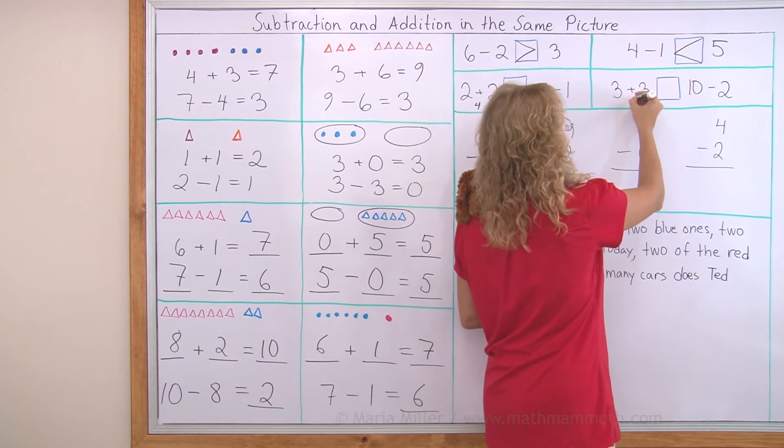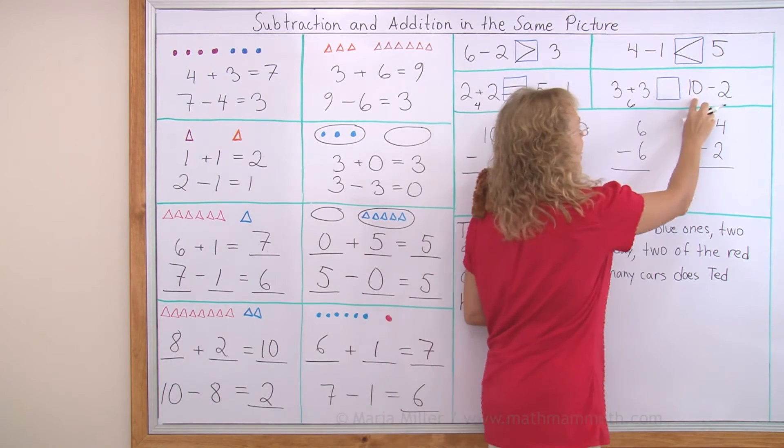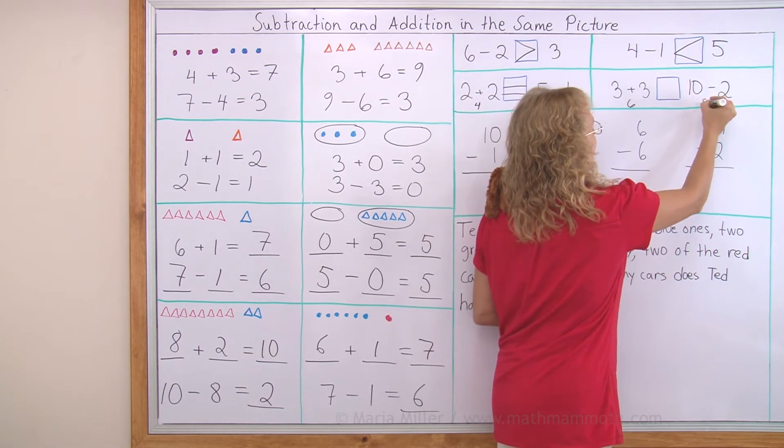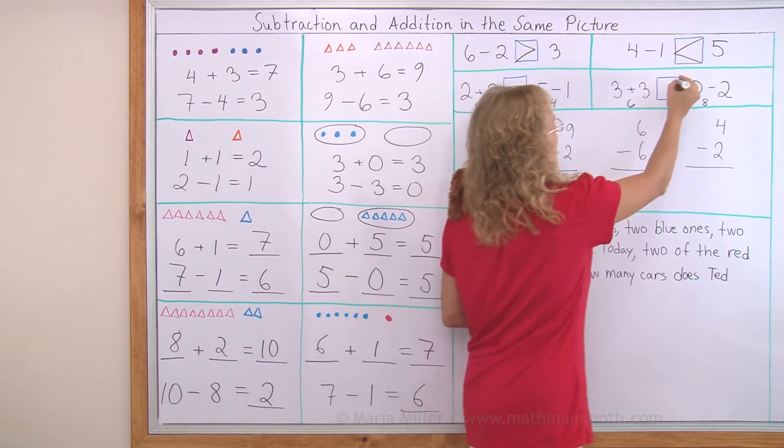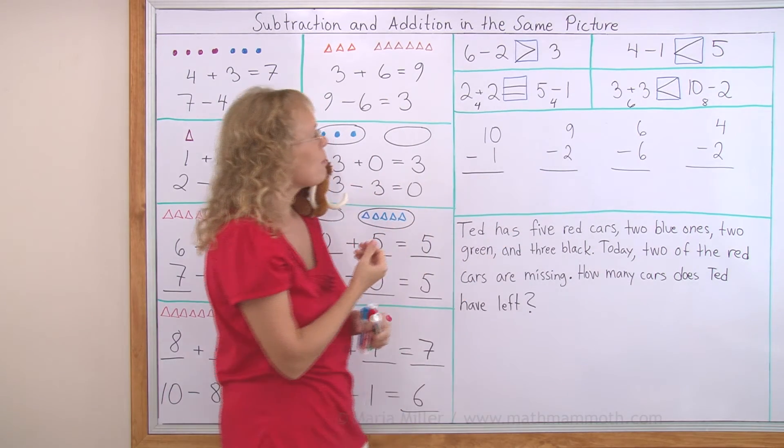3 + 3. That would be six. 10 - 2. Again, count down. Ten, nine, eight. This is eight. So eight is greater, like that. And here's another way to write subtraction problems where the numbers are under each other. You write your answer below this line.